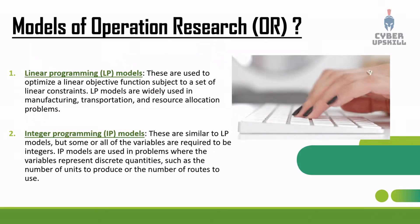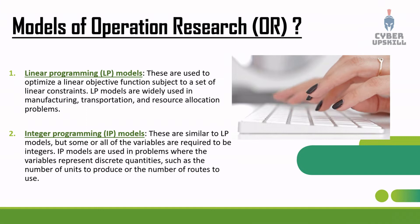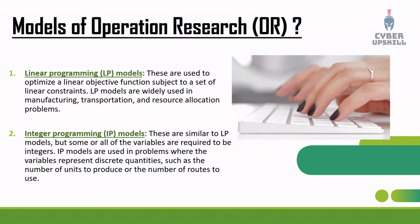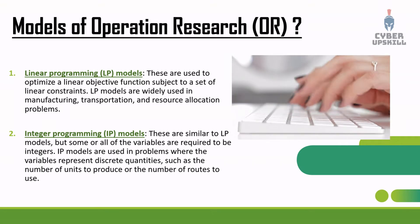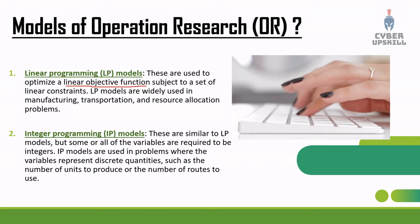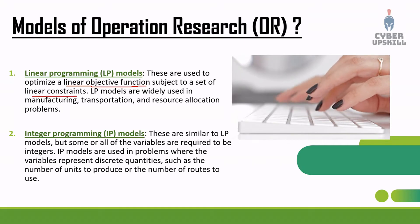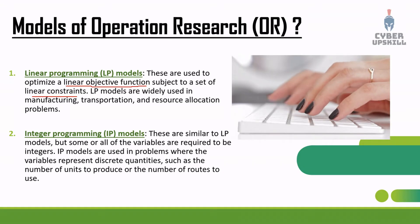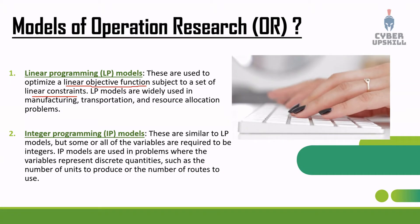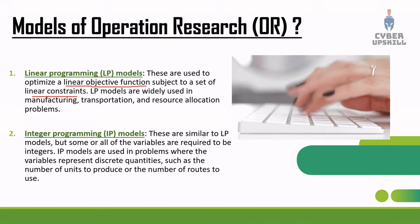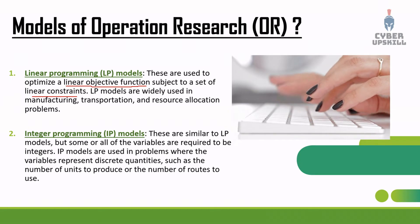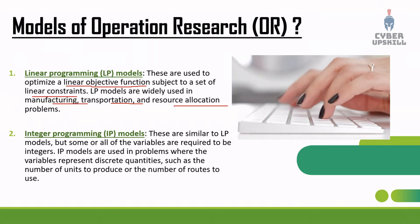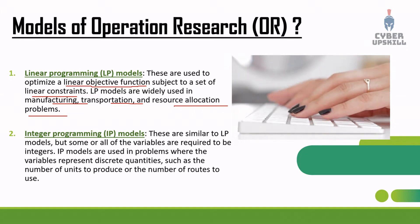The first model is linear programming, or LP. LP models are used to optimize a linear objective function subject to a set of linear constraints. Linear means a continuous state — one line is linear. LP models are widely used in manufacturing, transportation, and resource allocation problems.